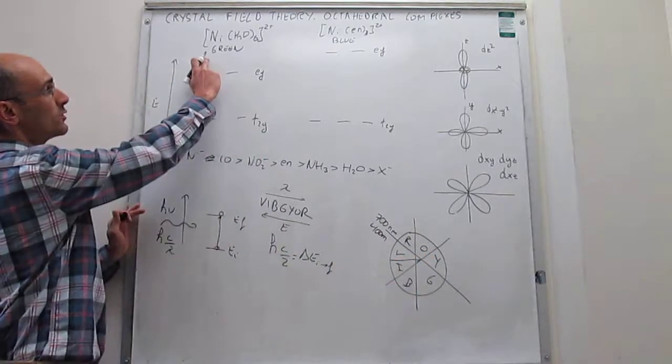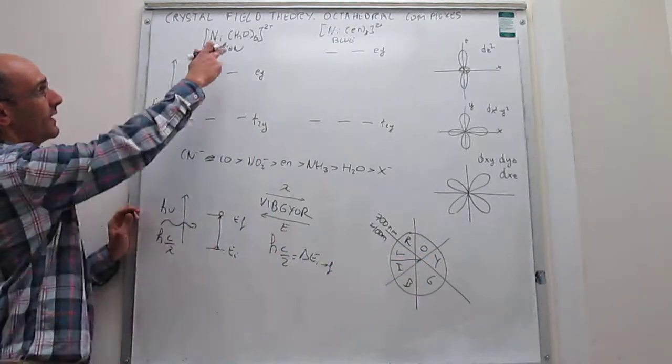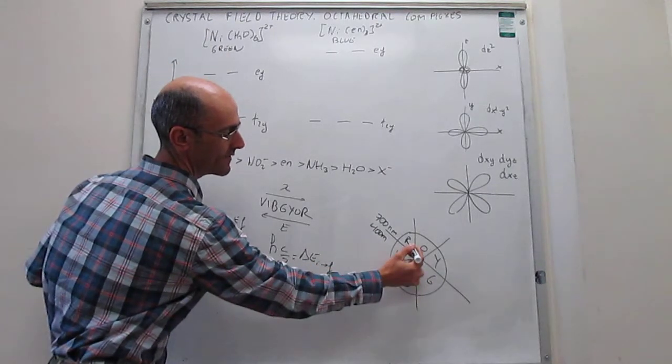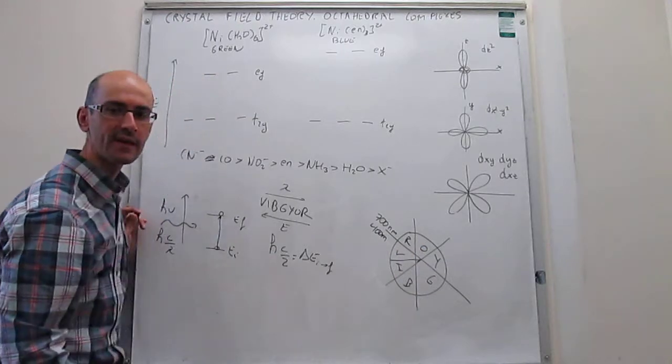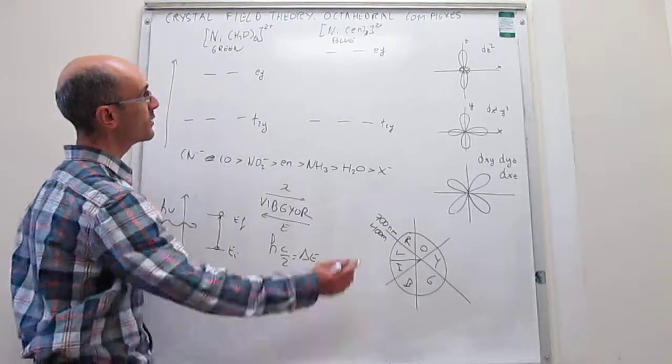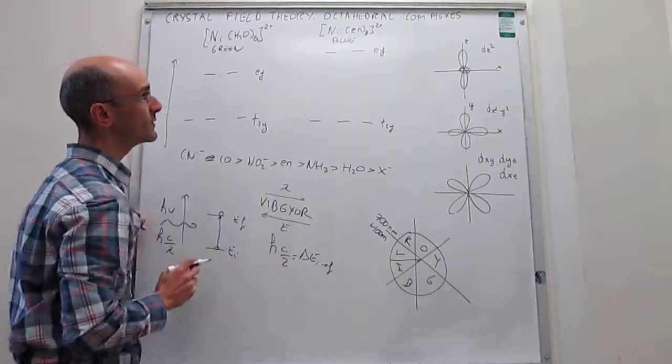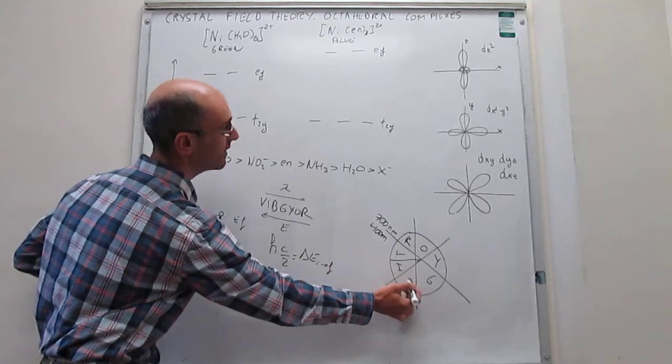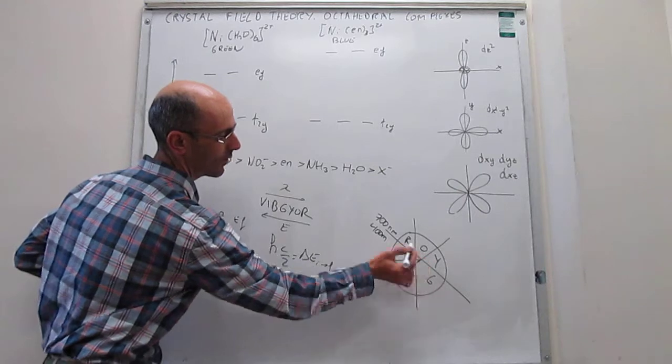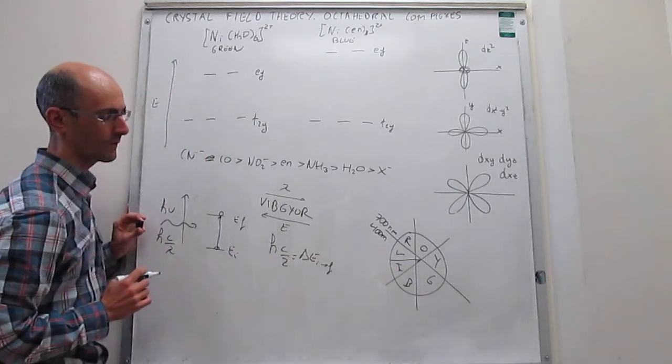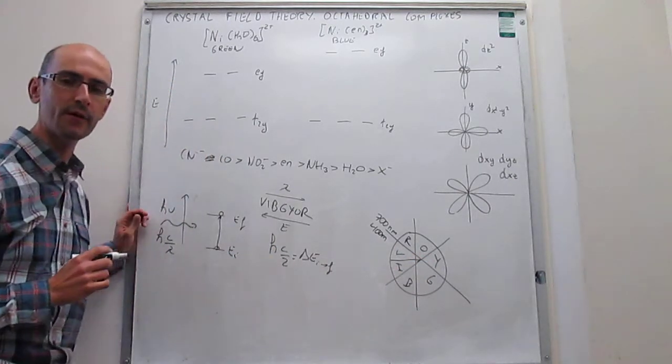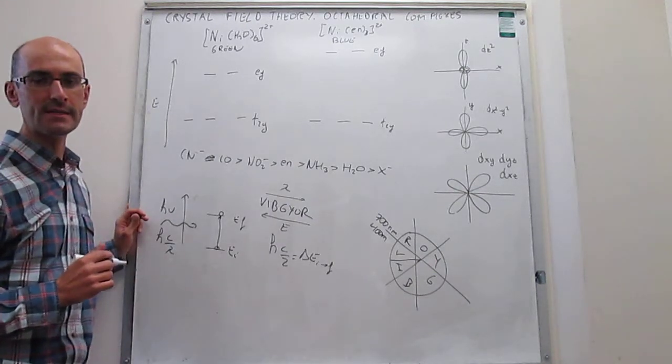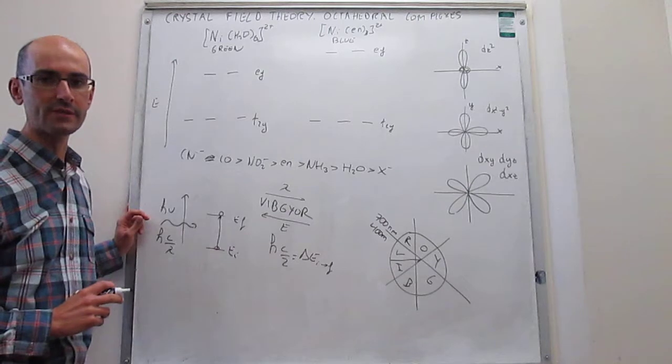If we observe here a green color for the hexa-aqua nickel complex, that means that the red is the color that has been absorbed. And if you observe a blue color for the tris-ethylenediamine complex, which is right here, blue, that means that the orange has been absorbed.